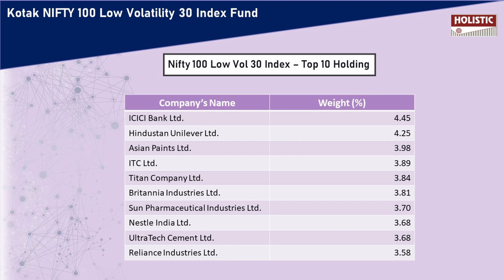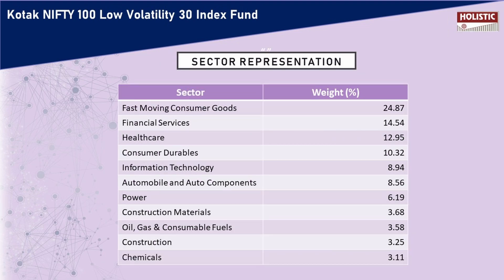Looking at the sector representation, the sectors in this fund include FMCG, financial services, healthcare, consumer durables, information technology, automobile and auto components, power, construction materials, oil, gas and consumable fuels, construction, and chemicals. The top three sectors — FMCG at 24.87%, financial services, and healthcare — together amount to about 50% of the overall allocation.